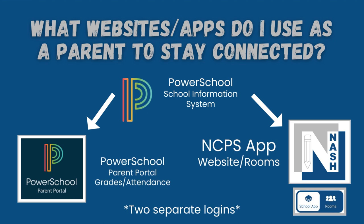So what websites and apps do I use to stay connected with my child? It starts off with PowerSchool, the school information system, where the data is securely stored. PowerSchool Parent Portal is where you access your child's grades and attendance. The Nash County Public Schools app is where you can access your child's school's website and the Rooms portion, which is what used to be ClassDojo — it's now Rooms, and it's all conveniently located inside of the app. Rooms and the PowerSchool Parent Portal require two separate logins.